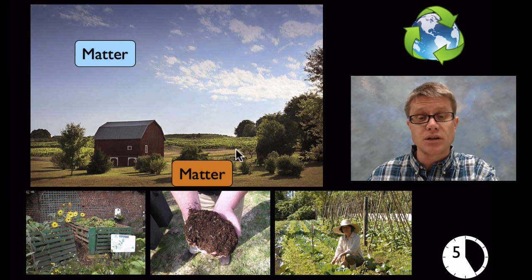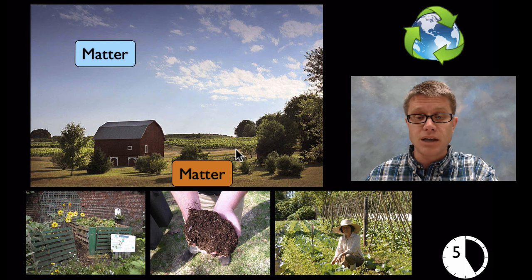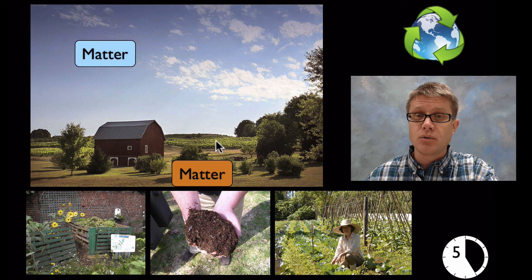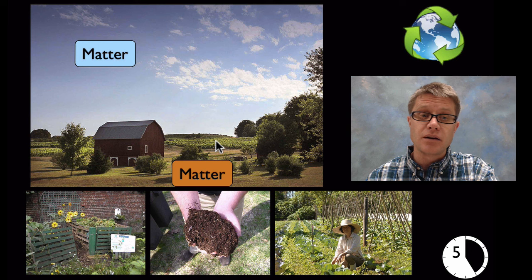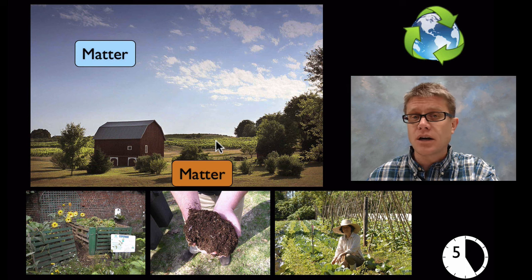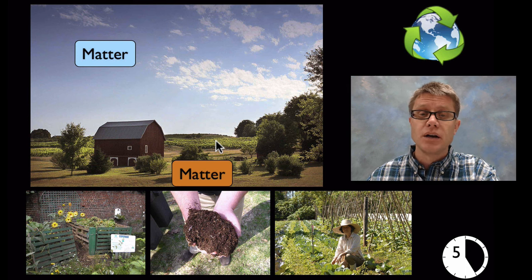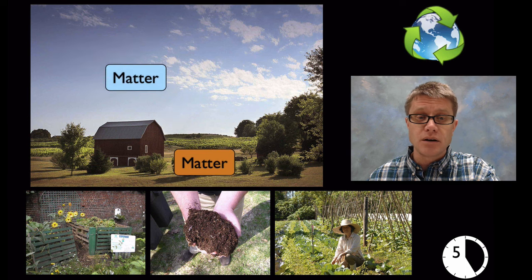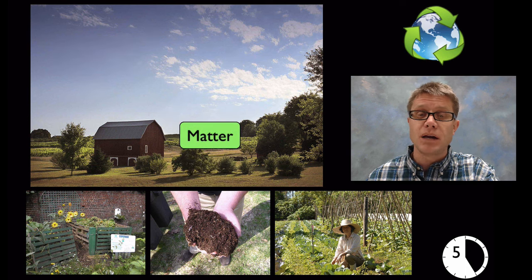So if we think about how plant material on a farm for example is made, how do these crops grow? Well they're getting matter from the soil. And they're also getting matter from the atmosphere. So they're getting matter from the air. So what's some matter from the air that the plants are taking in? They're taking in carbon dioxide. What is some matter from the soil? Nitrogen. They're taking in water. They're taking in nutrients that they require.